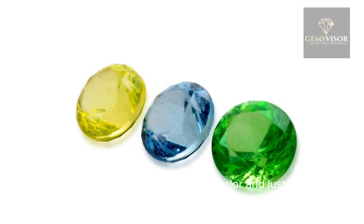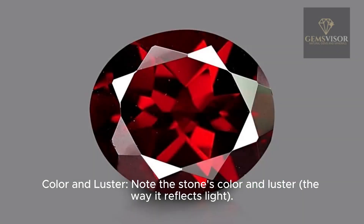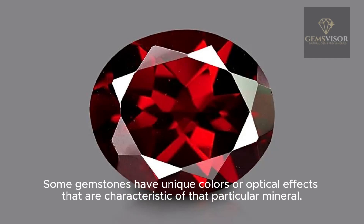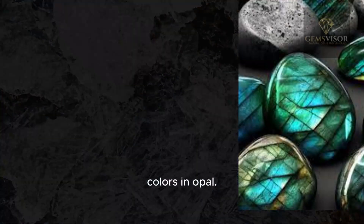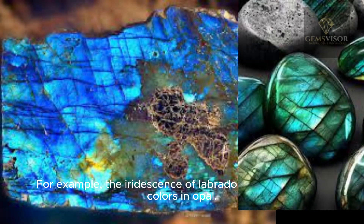Color and luster — the way the stone reflects light — can also be informative. Some gemstones have unique colors or optical effects characteristic of that particular mineral, for example, the iridescence of labradorite or the play of colors in opal.